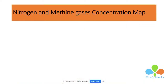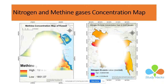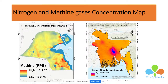Here you can see two maps — the first map is the methane concentration map, and the other is the nitrogen dioxide concentration map for January 2020. We will discuss how to make maps like these and how to get the TIFF images. You can also see the units: one is parts per billion, and another is mole per meter square. We will discuss unit conversion as well.